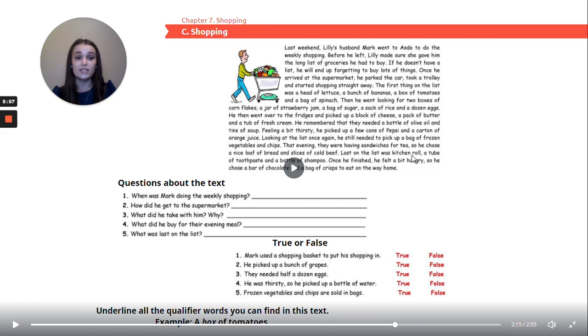Last on the list was kitchen roll, a tube of toothpaste, and a bottle of shampoo. Once he finished, he felt a bit hungry. So he chose a bar of chocolate and a bag of crisps to eat on the way home. Now let's look at the questions.